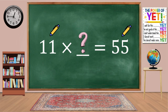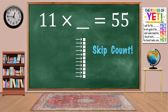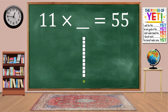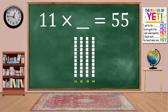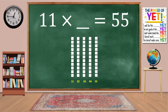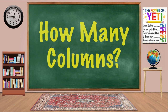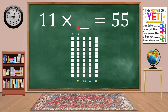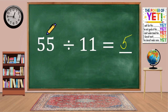We'll start with a column of 11 rows and skip count to 55: 11, 22, 33, 44, 55. We've reached 55. How many columns do we have? 1, 2, 3, 4, 5. 11 times 5 equals 55, so 55 divided by 11 equals 5.